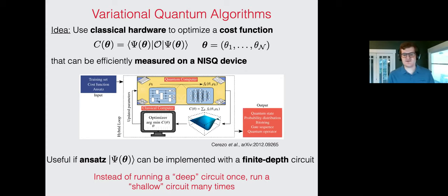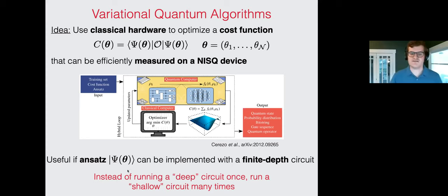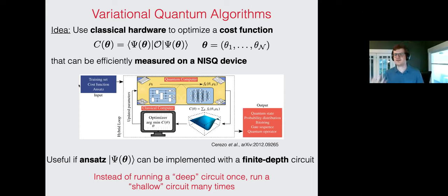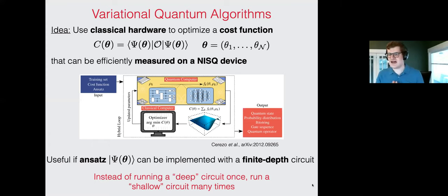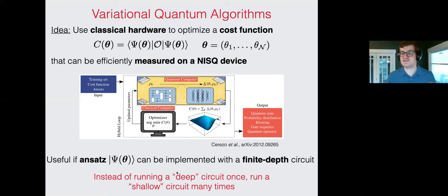The state ψ(θ) used to compute the cost function, parameterized in terms of variables θ, is called an ansatz state. This is only a useful approach if the ansatz ψ(θ) can be implemented with a finite-depth circuit — one that uses a number of gates scaling ideally polynomially in system size. If that is true, you can potentially get some advantage by running a shallow circuit many times instead of a deep circuit once. This really lends itself to the NISQ era because NISQ devices have limited coherence time and can execute short circuits, but not long circuits, at least reliably.